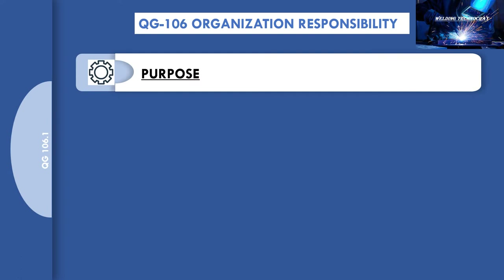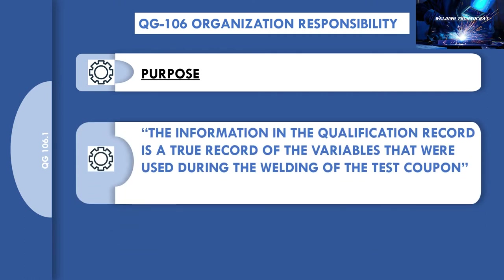The purpose of giving only the designated welding engineer such specific responsibility is that the welding qualification requirements of Section 9 code that an organization adopts must be fully supervised and controlled, so that the information in the qualification record is a true record of the variables used during the welding of the test coupon. In summary, as a well-qualified personnel is appointed, there should be no error in recording all the ASME Section 9 code-specified welding-related variables.